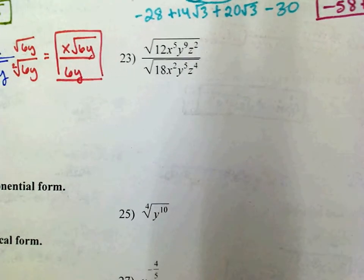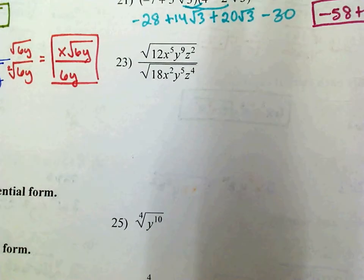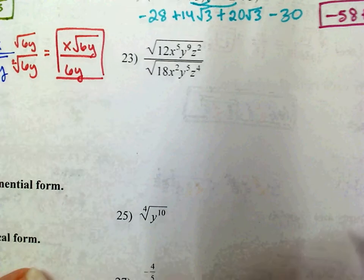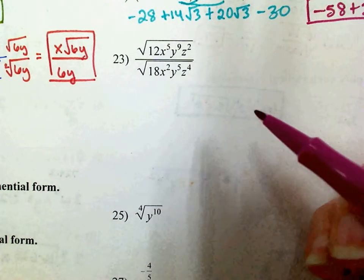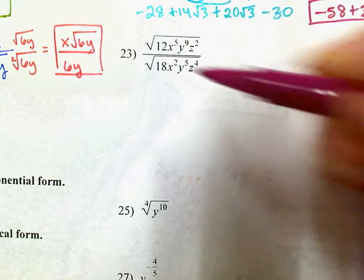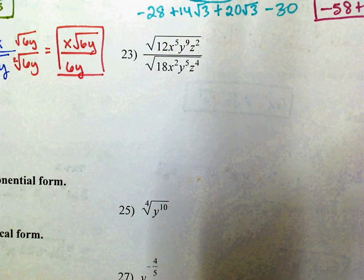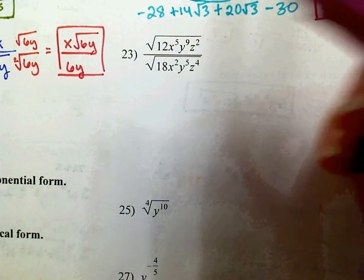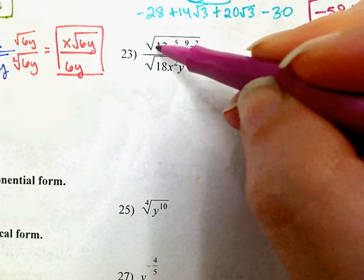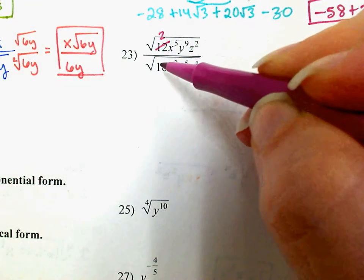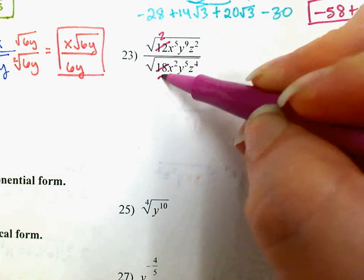On number 23, I'm going to be simplifying this right here. I've got 12 and 18 in the numerator. What I'm going to do is divide them both by 6. If I divide that by 6, I get 2, and if I divide that by 6, I get 3.